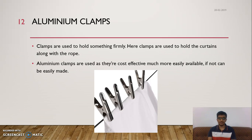Aluminium clamps are similar to the regular clips we use to hang clothes to dry. We are using aluminium clamps because they can carry the weight of the curtains — aluminium can hold more strength than what is commonly imagined. We use them to hold the curtains along with the rope lines of the pulleys. Aluminium clamps are also cost-effective, and unlike plastic, aluminium is not a non-biodegradable material, keeping the project environmentally friendly.